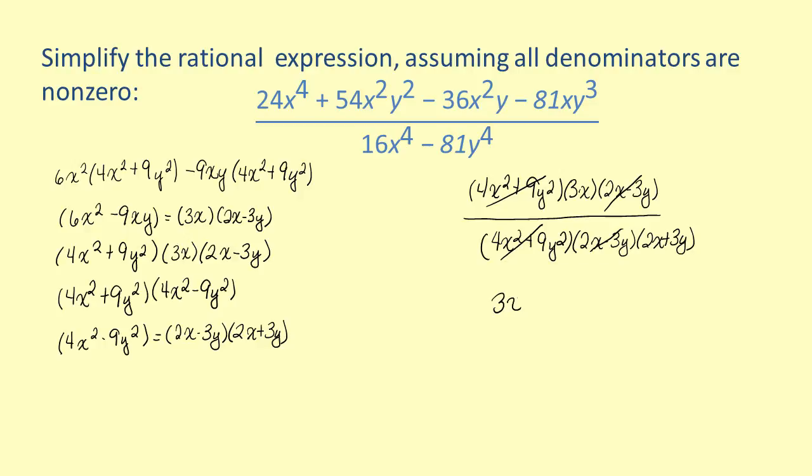The simplified form of the rational expression is 3x over the quantity 2x plus 3y.